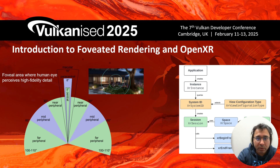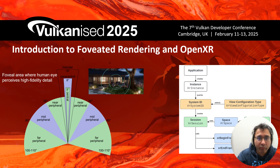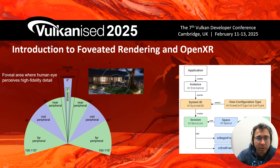You have an XR space, which represents the 3D coordinate system of the XR environment and helps you map objects within it. XR SwapChain is very similar to the SwapChain concept in Vulkan. The most important part is your render loop, where you call XR WaitFrame, then BeginFrame, then EndFrame. WaitFrame throttles your application's frame loop to keep it in sync with the display — it synchronizes your application's frame submission with the display.